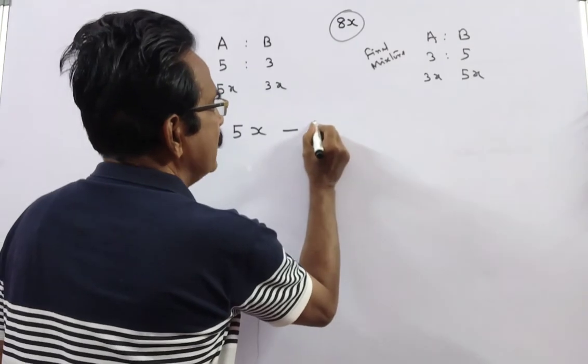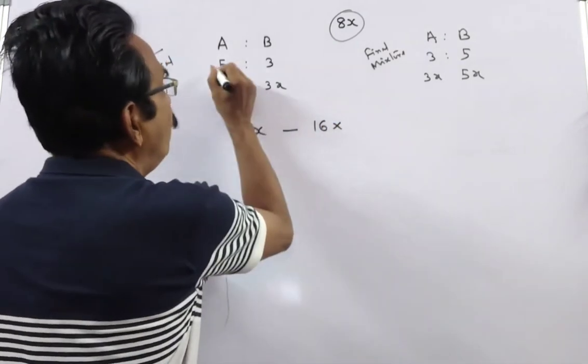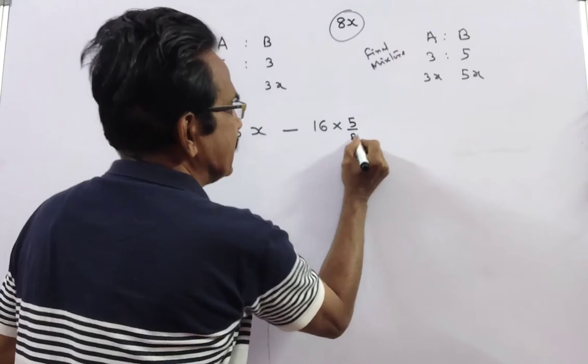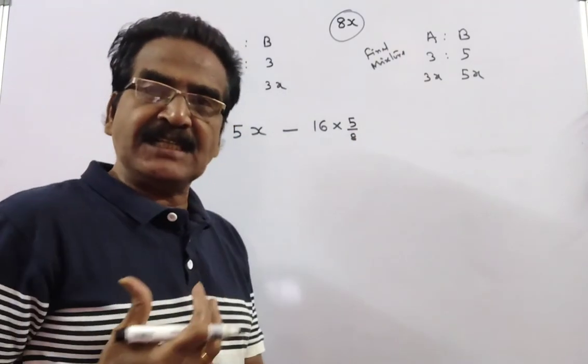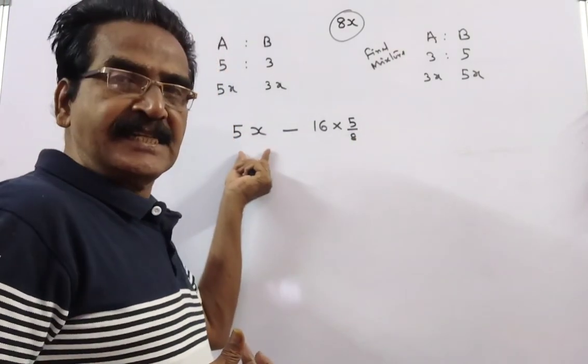Liquid A is drawn 16 into 5 by 8. 16 into 5 by 8 liters of liquid A is drawn. Friends, this is the initial position.